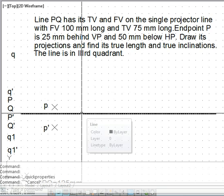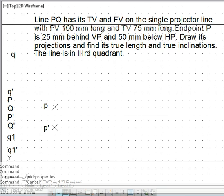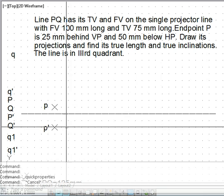The given information is the line lies on a single projected line, the front view is 100 mm long, top view is 75 mm long, then point P is 25 mm behind VP and 50 mm below HP.